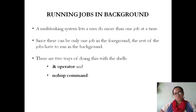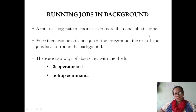In the previous session, we talked about background processes. A multitasking system allows a user to do more than one job at a time. There can only be one job in the foreground; the rest will be in the background. There is only one desktop, so you can see only one application at a time even though multiple are open.